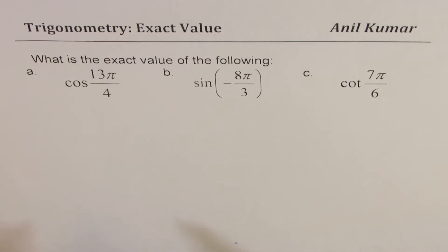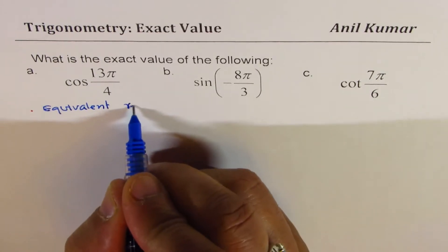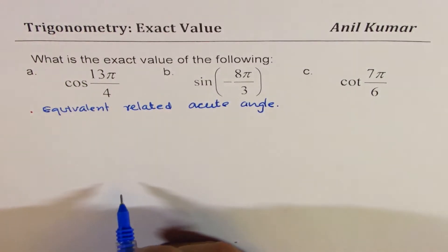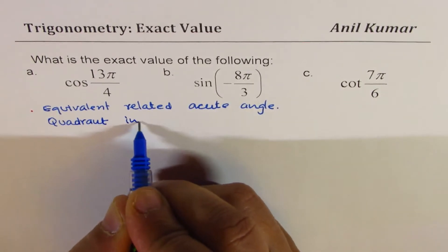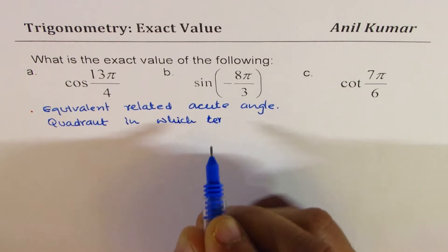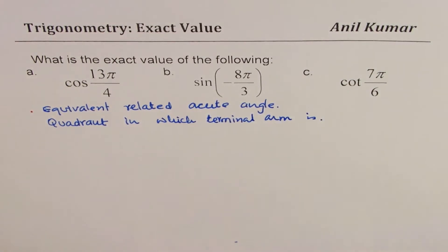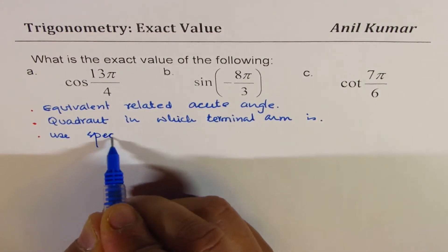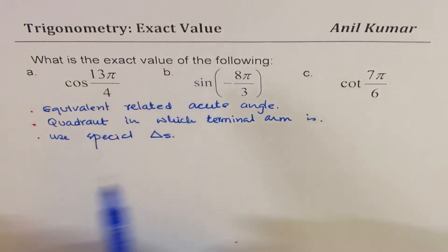There are two steps: first, we find the equivalent related acute angle, and second, we find the quadrant in which the terminal arm lies. These two things together help us determine the sign, and then we use special triangles to get the exact value.